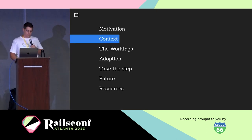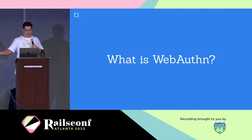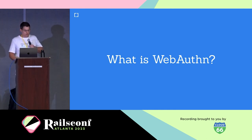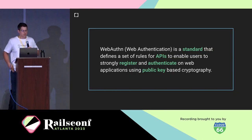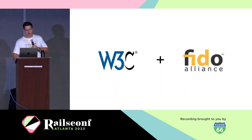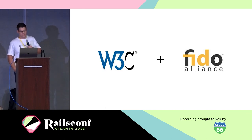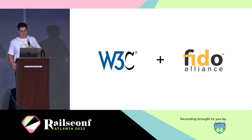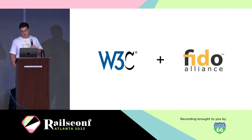Moving on to what WebAuthn actually is. WebAuthn is a standard that defines a set of rules for APIs to enable users to strongly register and authenticate on web applications using public key-based cryptography. The people that created it are the W3C — the organization that defines web standards — plus the FIDO Alliance. FIDO stands for Fast Identity Online. It's an open industry organization started in 2013 with the goal of removing the reliance on passwords.